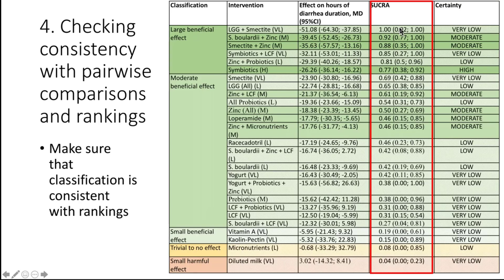This is supplemented by the SUCRA, which is listed here. We check consistency with the SUCRA, but the SUCRA doesn't consider the certainty of the evidence. If you were to just go with it, you might draw different conclusions from an interpretation that includes both the certainty of the evidence and the magnitude of the effect. But it helps us confirm we are in the right ballpark.